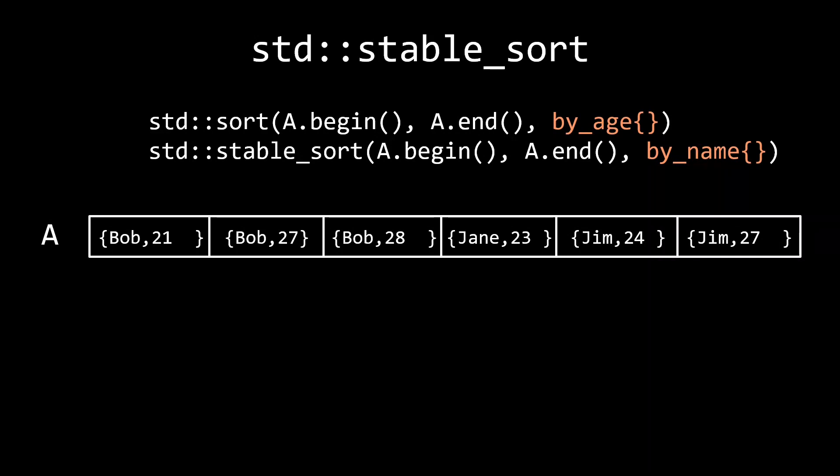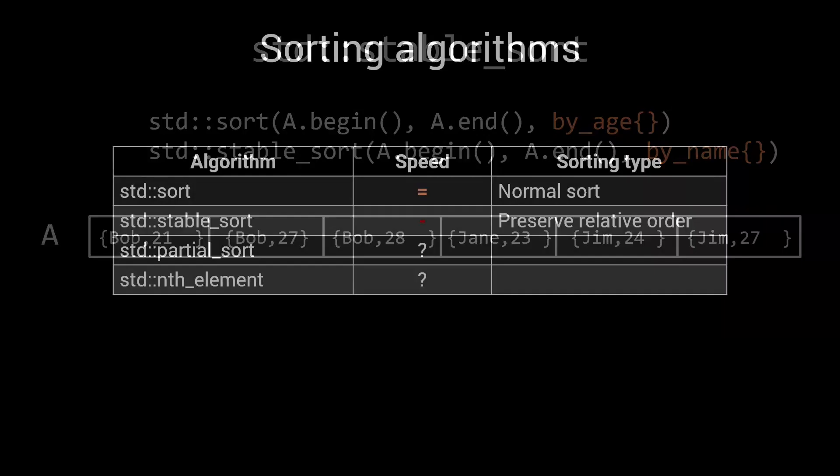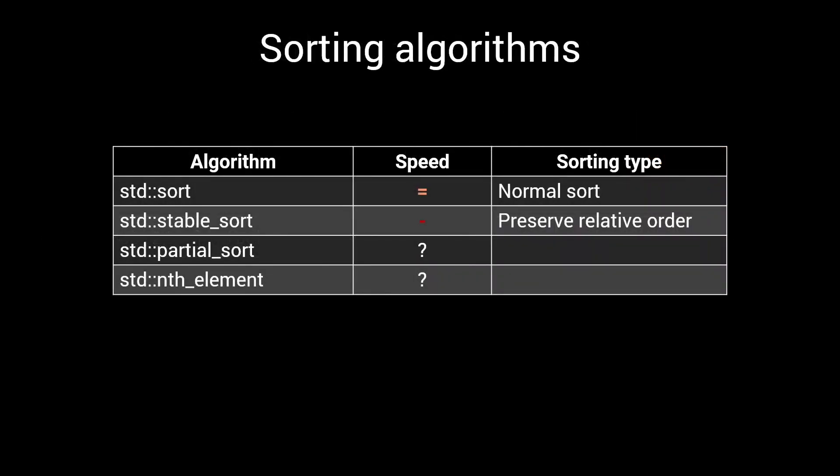So, why would you not just use stable sort for all your sorting needs? That's where performance comes back into play. The extra constraint of keeping the relative order of equal elements the same in stable sort simply comes at a cost. So, if you don't care about your sort being stable, you'll find that the normal sorting algorithm is faster.